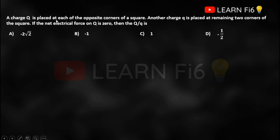A charge Q is placed at each of the opposite corners of a square. Another charge q is placed at the remaining two corners of the square. If the net electrical force on Q is zero, find the ratio Q/q. The options are: minus 2√2, minus 1, and minus 1/2.